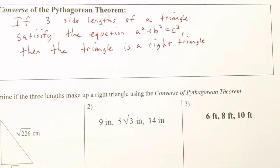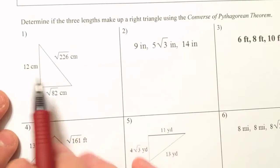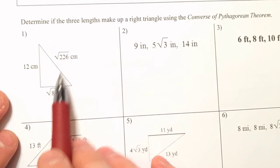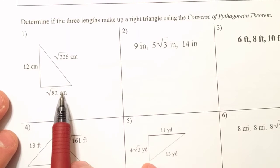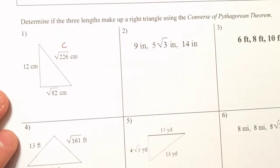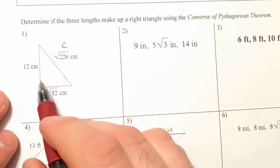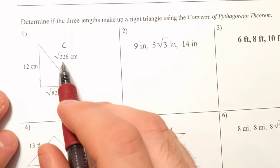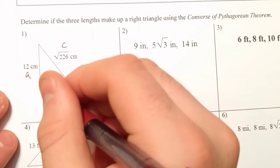So we look at the first example here. We have 12, square root of 226, and the square root of 82. This is going to be our possible hypotenuse. This looks like our possible right angle, so this is going to be our possible hypotenuse. These are my two legs.